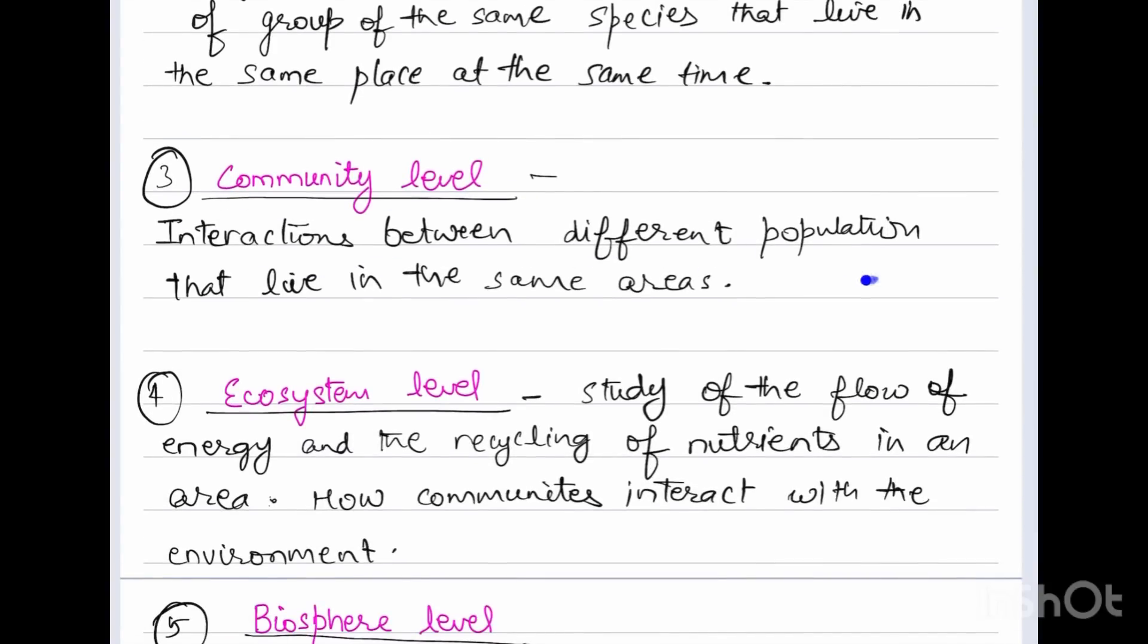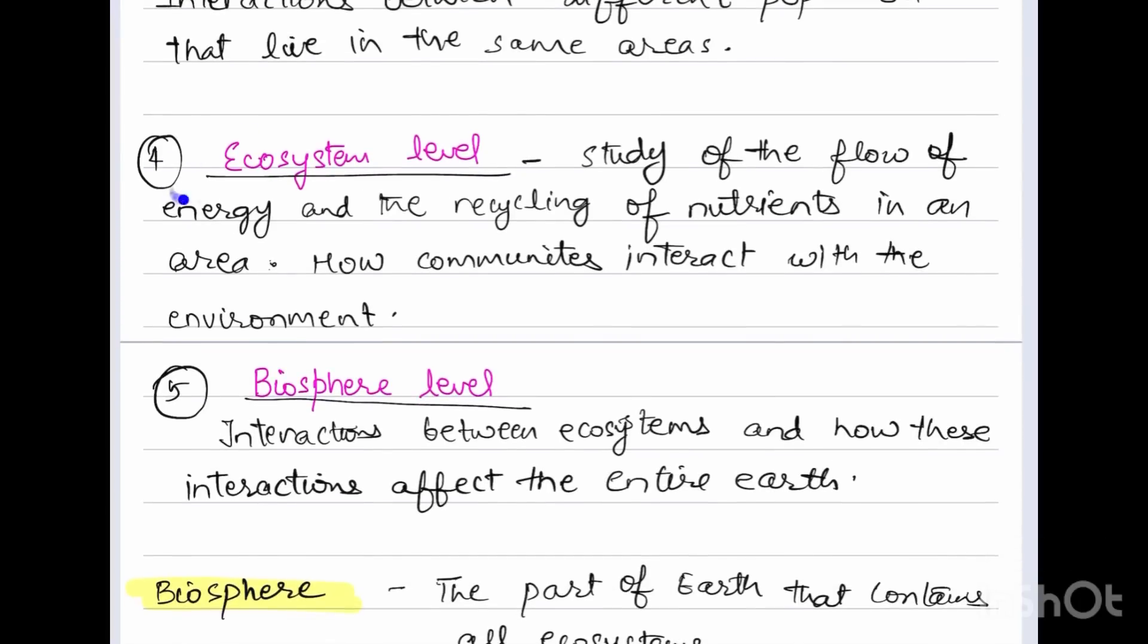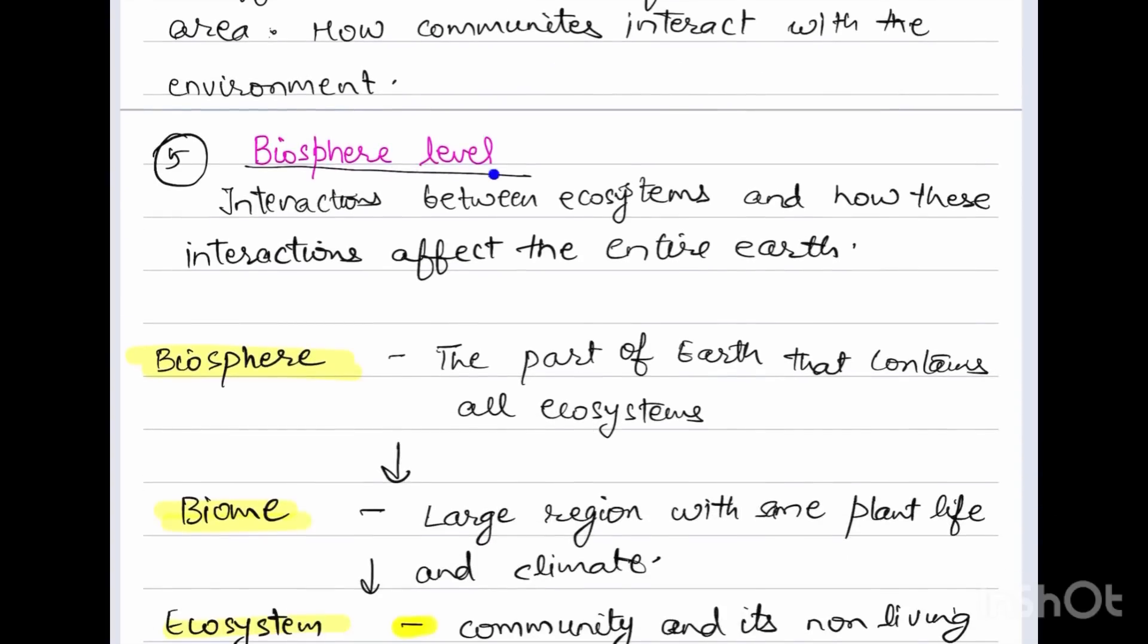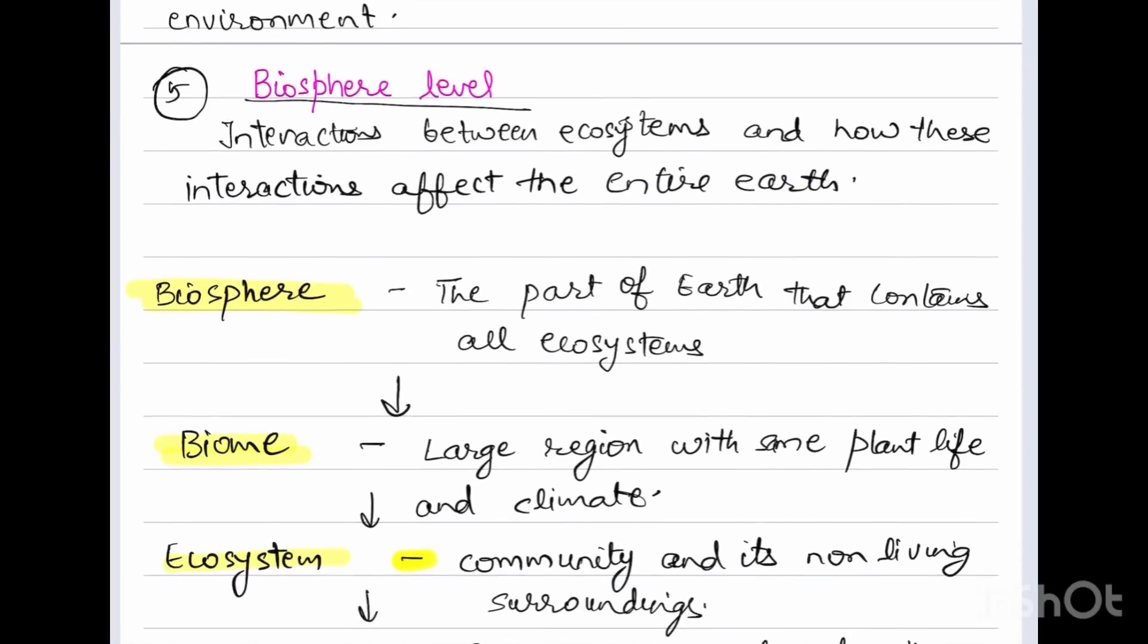Interactions between different populations that live in the same areas. Fourth, we have ecosystem level, the study of the flow of energy and recycling of nutrients in an area and how communities interact with the environment. Fifth, we have biosphere level at a bigger scale, so interaction between ecosystems and how these interactions affect the entire Earth.